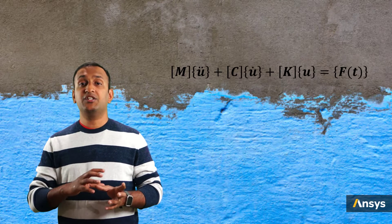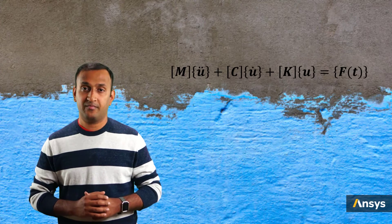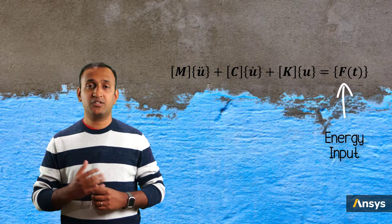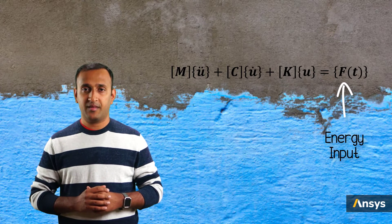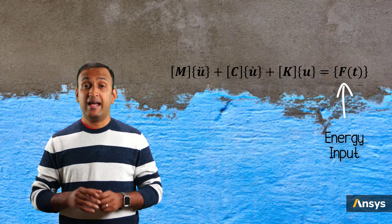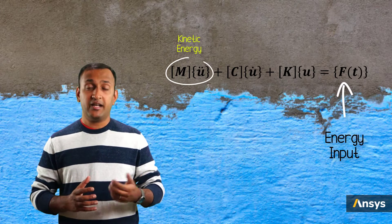Going back to the governing equations, we can see how the energy is changing forms in a system. The external loads do work on the system and act as a source of energy. Depending on the dynamic properties of the system, this energy may be stored as kinetic energy or as potential energy.